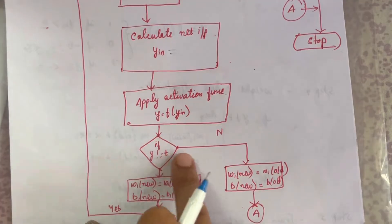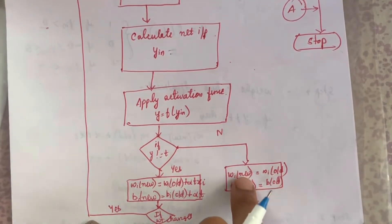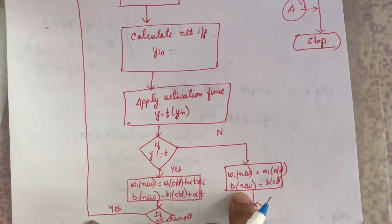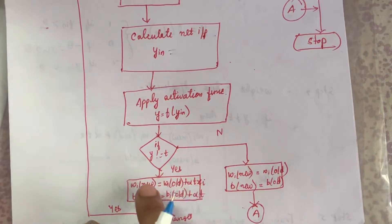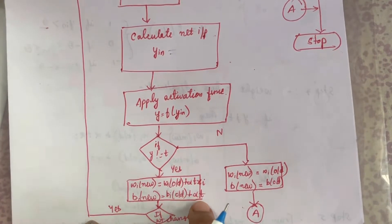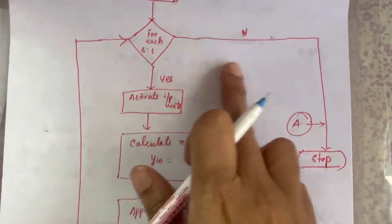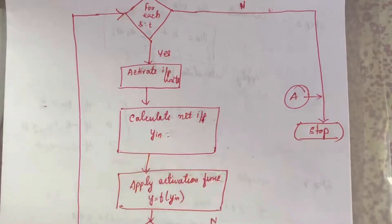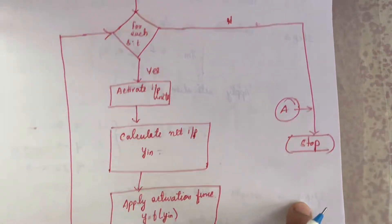If y equals t, there is no change — you set the old weights to be the new weights and the old bias value to be the new bias value. If they are not equal, you apply the formula: w_new = w_old + α·t·xi for new weights, and b_new = b_old + α·t for the new bias value. If there are weight changes, you proceed with this step again. If there are no further inputs, you stop the algorithm.